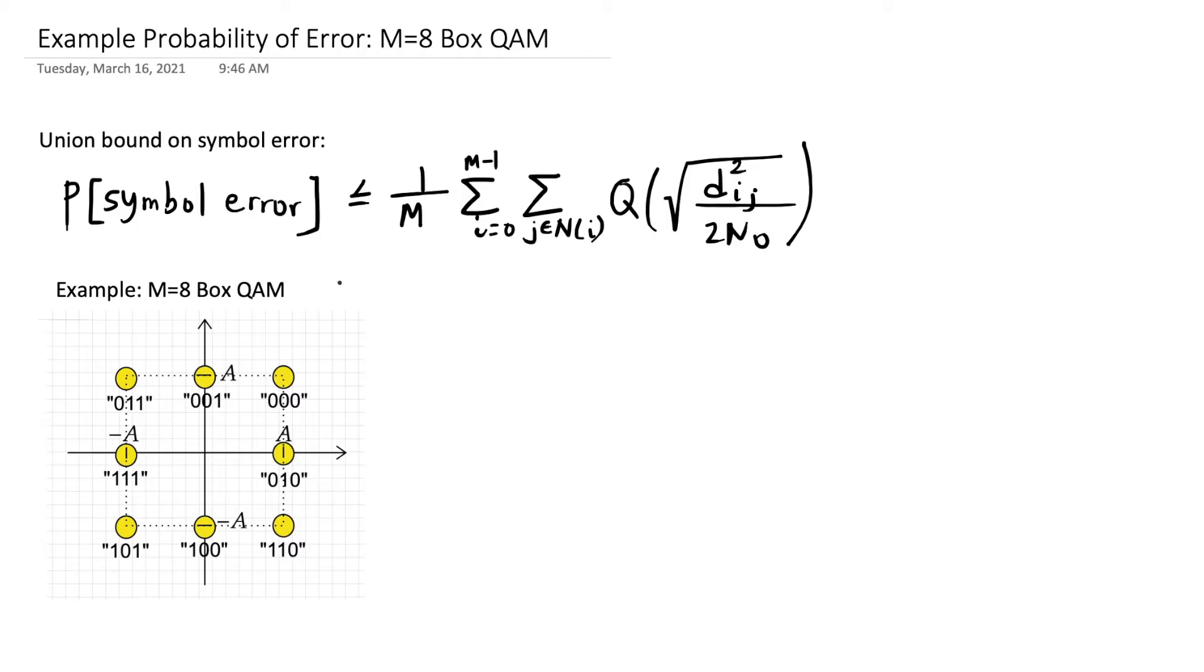My name is Neil Patwari. In this video segment, I'm going to do an example of the union bound, which we derived in the previous episodes to be represented by this equation, that the probability of symbol error is less than or equal to this formula involving an average over all symbols and a q function and the distance between symbols.